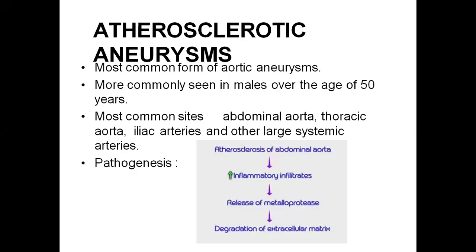The first one is the atherosclerotic aneurysm, where the pathogenesis lies behind the development of an atherosclerotic plaque, and the site of the atherosclerotic plaque develops into an aneurysm. This is the most common type of aneurysm and is commonly seen in males over the age of 50 years. The most common sites are the abdominal aorta, thoracic aorta, and other large systemic arteries. The pathogenesis involves atherosclerosis leading to inflammatory infiltrates, which release metalloprotease, causing degradation of the extracellular matrix. This matrix forms the collagen fibers — the supporting structure of the vascular vessel wall — and its degradation leads to a weakened spot and development of aneurysm.